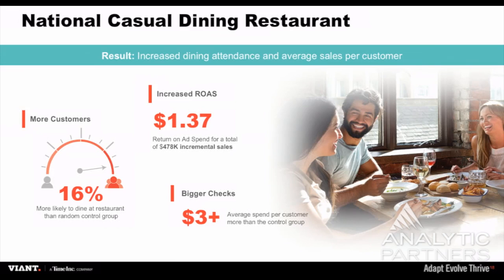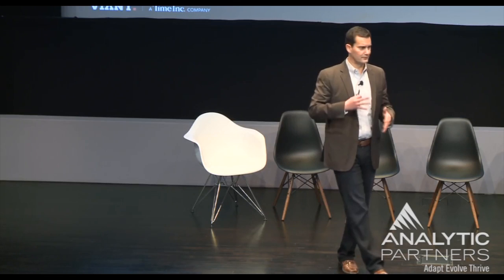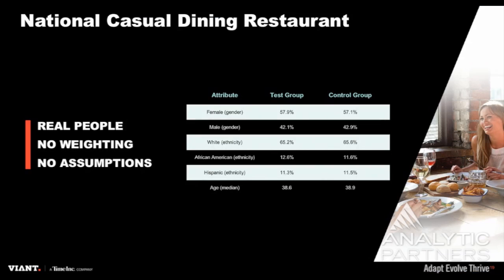We've all seen a lot of studies — you don't see many that don't work — so is this lift really a true test/control? We go back because we are a people-based platform and we check ourselves. We look at the makeup of the two groups after the fact. Looking at gender, ethnicity, and age breakouts, you can see those two groups are very representative — they were exposed to the same targeting criteria — giving us a more true measurement of ad impact.